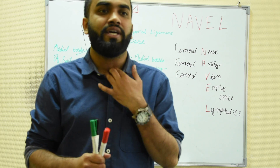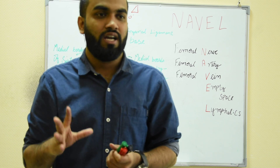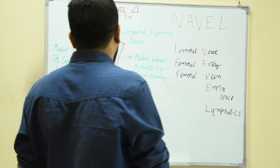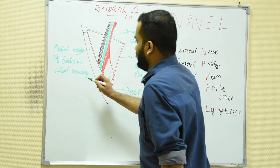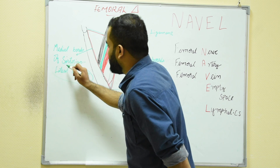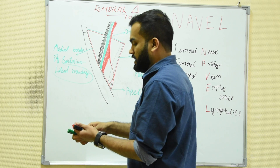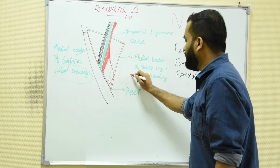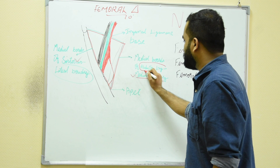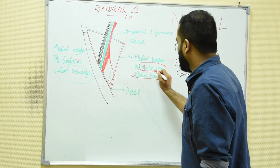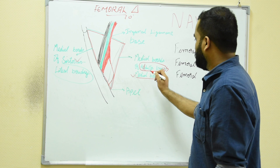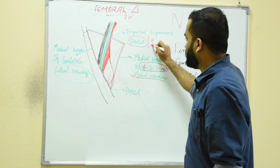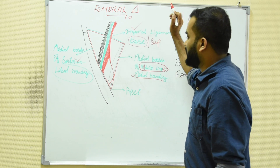Now, the contents of the femoral triangle can be remembered through the mnemonic NAVEL — N-A-V-E-L. The lateral boundary is the medial part of sartorius, which is the longest muscle, also called the tailor's muscle. The medial boundary is by adductor longus, and the base or superior part is by the inguinal ligament.